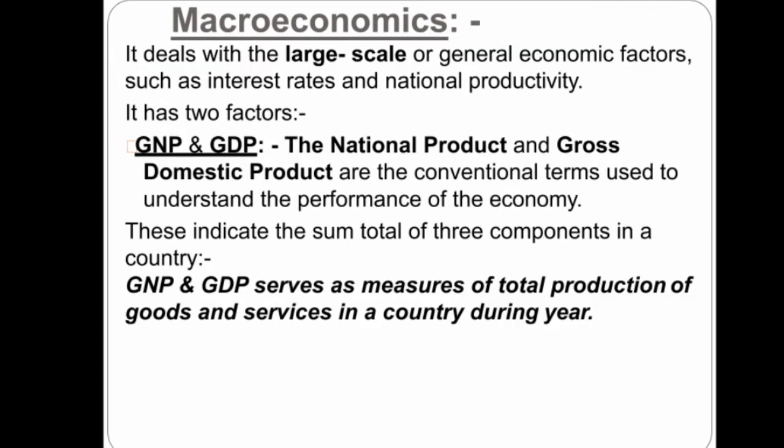Macroeconomics deals with general economic factors such as interest rate and national productivity. There are two important measures: GNP (Gross National Product) and GDP (Gross Domestic Product). GNP and GDP serve as measures of total production of goods and services in a country.